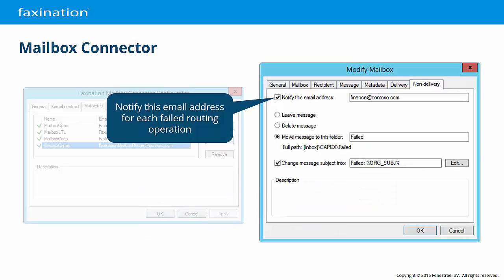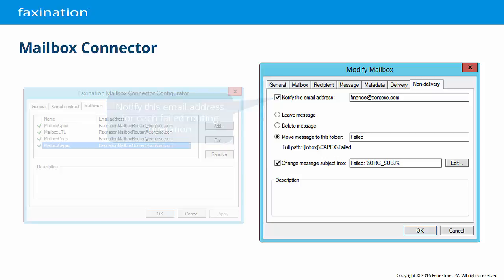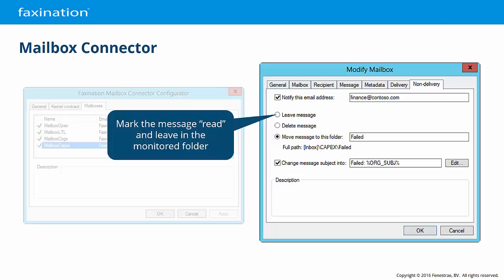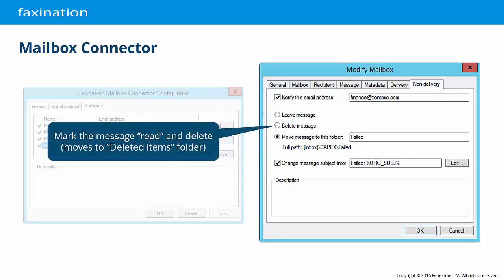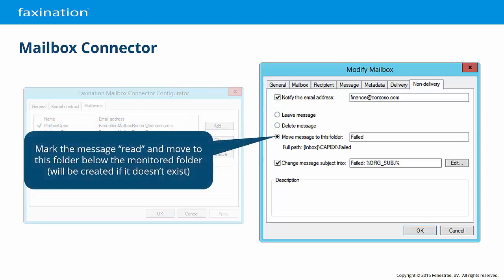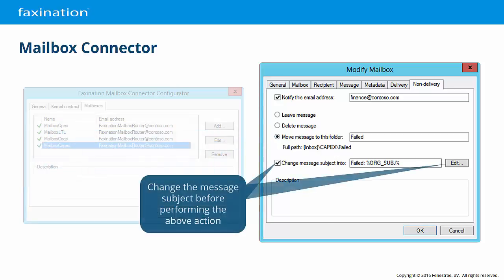The Non-Delivery tab contains the same options. In this case, notifying an email address of a routing failure is probably a good idea. As before, you can choose to mark the message read and leave it in the folder, mark the message read and then delete it, or mark the message read and move it to a specific folder within the same mailbox. For non-deliveries, by default, we will add a 'failed:' prefix to the original subject.